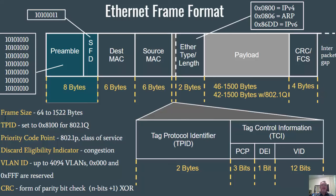The Ethernet frame size is 64 bytes minimum to 1522 bytes maximum. Where does that come from? Taking the header and trailer size — the header is 14 bytes (destination MAC 6, source MAC 6, Ethertype 2) and the trailer is 4 bytes, giving 18 bytes total overhead. 18 plus 46 minimum payload equals 64. 1500 plus 18 equals 1518. The extra 4 bytes to reach 1522 come from the 802.1Q tag: the TPID field of 2 bytes and the Tag Control Information field of another 2 bytes.